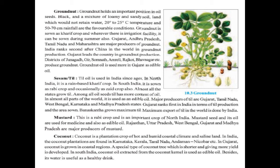Next is sesame or till. Till oil has been used in India since ages. In North India it is a rain-based kharif crop; in South India it is sown as a rabi crop and occasionally as a zaid crop also. Among all oil seeds, till has the highest oil content and is used as edible oil throughout most of the world. Major producers of till are Gujarat, Tamil Nadu, West Bengal, Karnataka, and Madhya Pradesh. Gujarat ranks first in India in terms of till production, and India does the maximum export of till in the world.